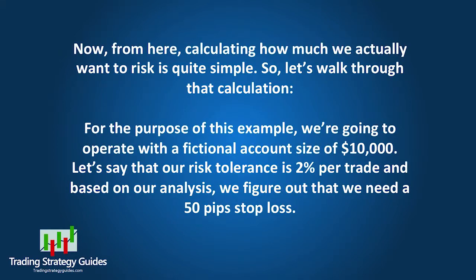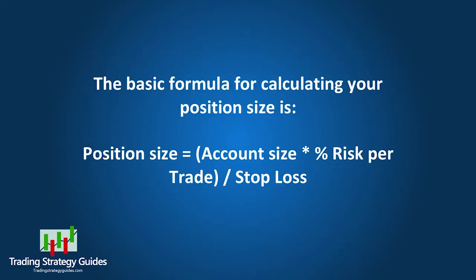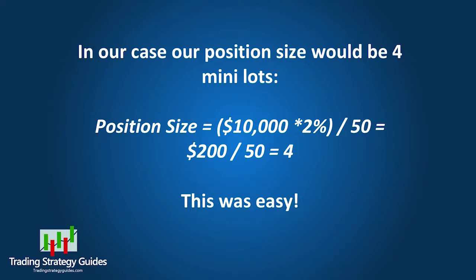From here, calculating how much we actually want to risk is quite simple. For this example, we operate with a fictional account size of $10,000. Our risk tolerance is 2% per trade and, based on our analysis, we need a 50-pip stop loss. The basic formula is: Position Size equals Account Size times Percent Risk Per Trade, divided by Stop Loss. In our case, Position Size equals $10,000 times 2% divided by 50, which equals $200 divided by 50, equals 4 mini lots.